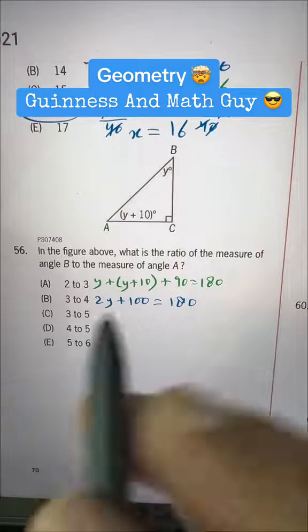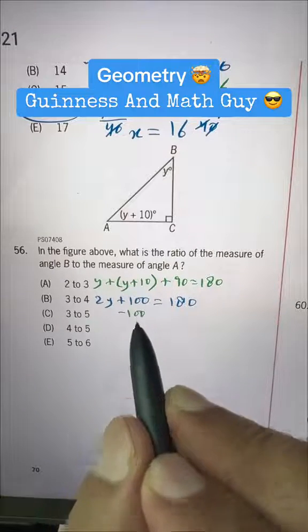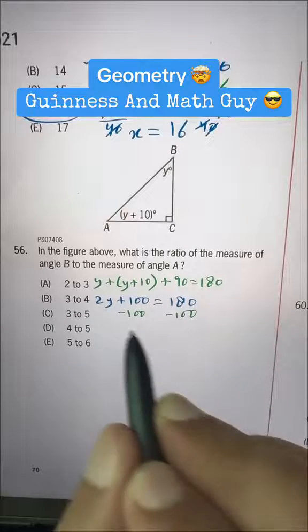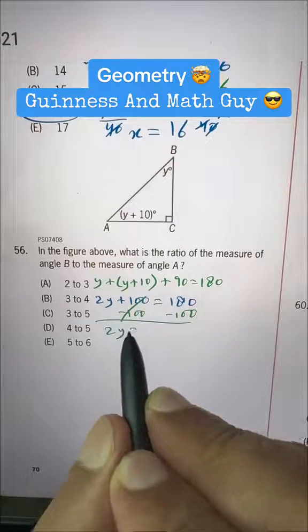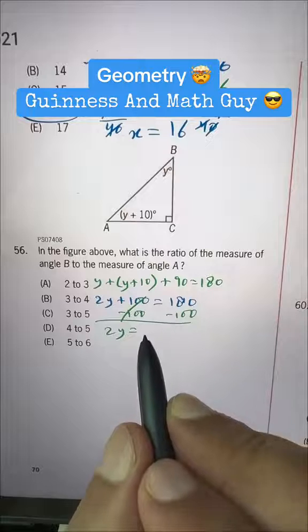Now subtract 100 from both sides, we get 2Y is equal to 180 minus 100. So it is 80.